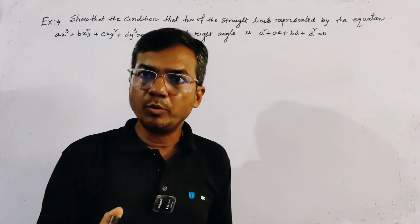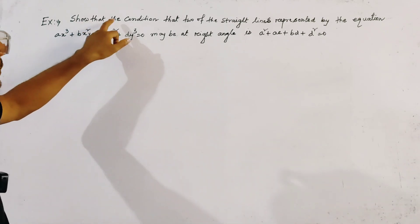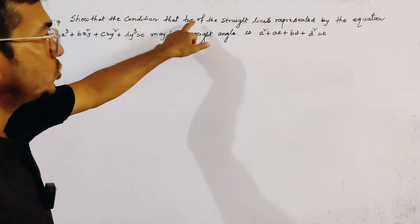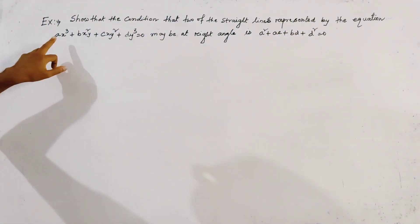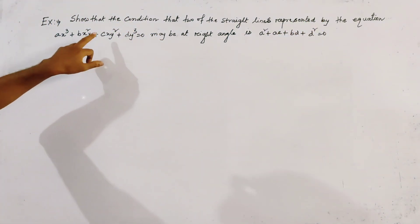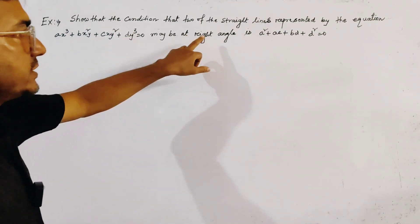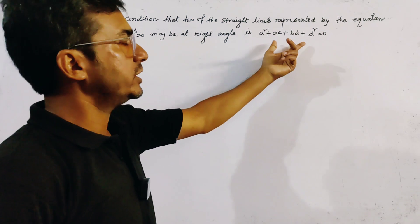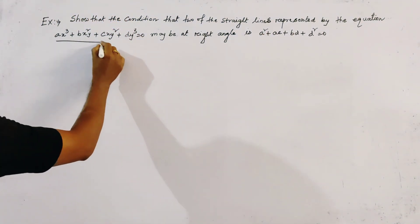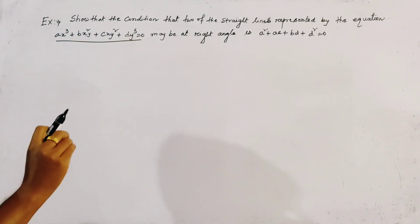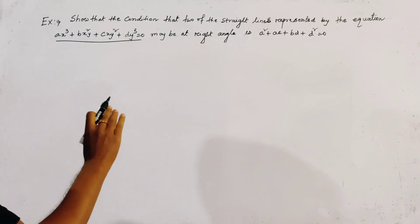Today's problem is from pair of straight lines. We need to find the condition that two of the straight lines represented by the equation ax³ + bx²y + cxy² + dy³ = 0 may be at right angles. It is clear that this is a homogeneous equation of degree 3 in x and y, so it represents three straight lines passing through the origin.